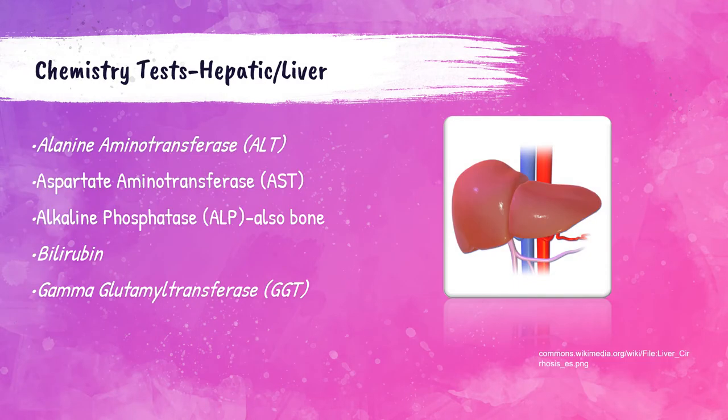The clinical chemistry department performs many different tests. Tests that primarily assess the function of the liver include: alanine aminotransferase (ALT), aspartate aminotransferase (AST), alkaline phosphatase (ALP), bilirubin, and gamma-glutamyl transferase (GGT). AST and ALP also occur in other tissue sources but are primarily considered hepatic tests.